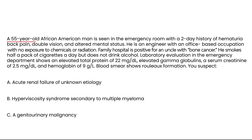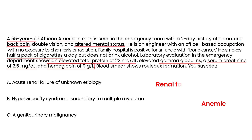Finally, a 55-year-old African-American man is seen in the emergency room with a two-day history of hematuria, back pain, double vision, and altered mental status. Family history is positive for an uncle with bone cancer. Lab exam shows elevated total protein, elevated gamma globulins, serum creatinine of 2.5, and hemoglobin of 9. Blood smear shows Rouleau formation. He has anemia, renal failure, and the classic Rouleau description — so a suspicion of multiple myeloma should definitely be present.